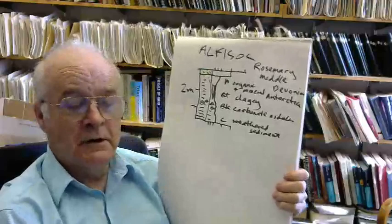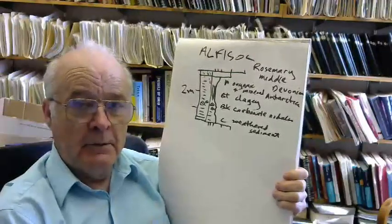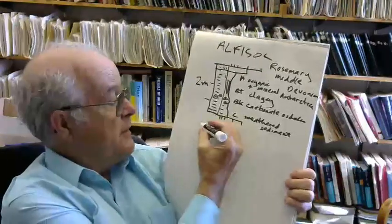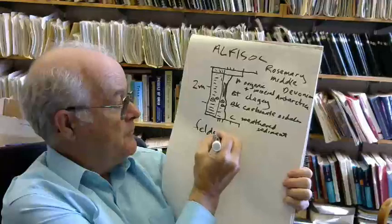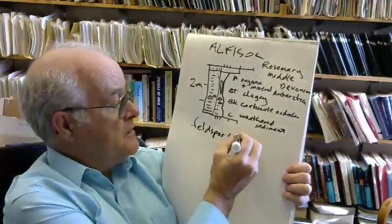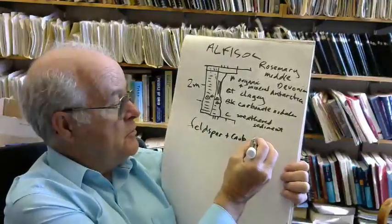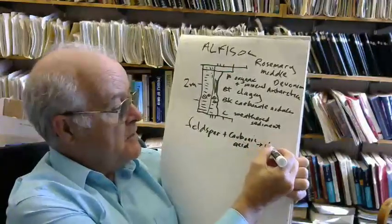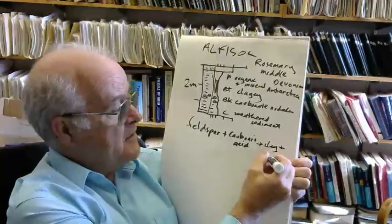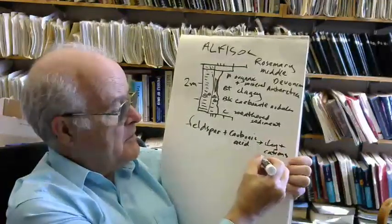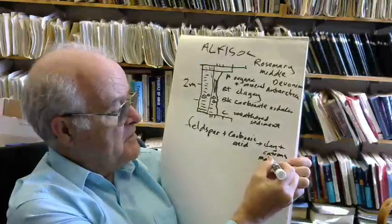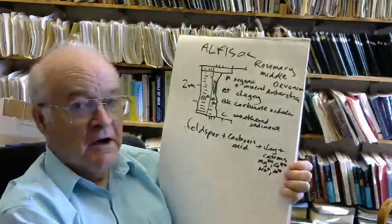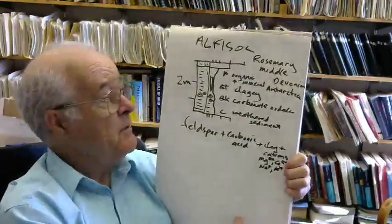It is taking carbon dioxide out of the atmosphere by the hydrolysis reaction, which is, of course, feldspar plus carbonic acid. The carbonic acid comes from CO2 in the air, mixing with water. And then that gives clay plus cations, which are magnesium 2+, calcium 2+, sodium +, and potassium +, which also feed the plant.